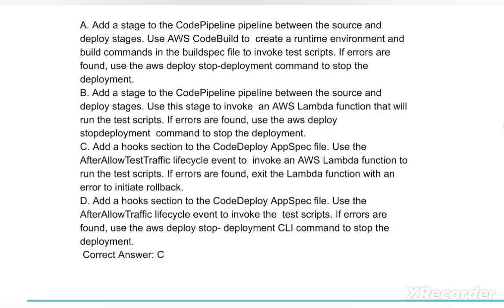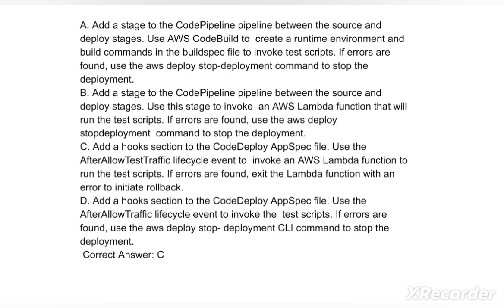Options are: Option A: Add a stage to the CodePipeline pipeline between the source and deploy stages. Use AWS CodeBuild to create a runtime environment and build commands in the buildspec file to invoke test scripts. If errors are found, use the AWS deploy stop-deployment command to stop the deployment.